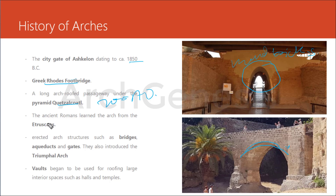Then the Etruscans — they were the first civilization to use an arch. Etruscan civilization was a civilization of ancient Italy in the area corresponding roughly to Tuscany, Umbria, and Lazio. After the Romans conquered the Etruscans, they learned the arch concept from them, refined it, and were the first builders to tap its full potential in arches, vaults, and domes. They erected arch structures such as bridges, aqueducts, and gates.